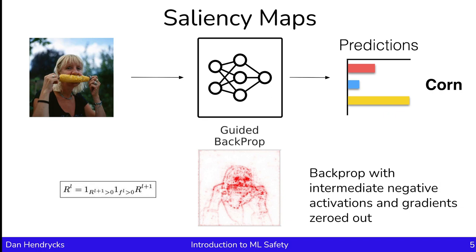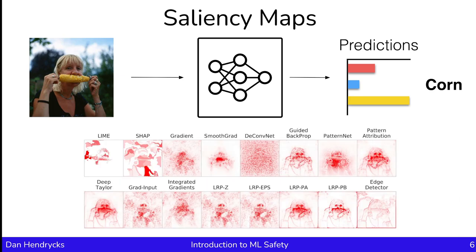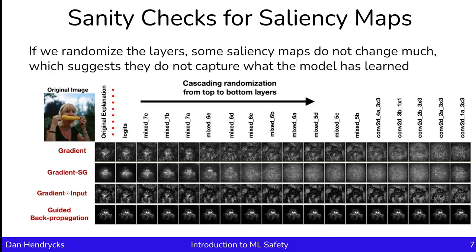Evidently, researchers like looking at interesting-looking saliency maps, and indeed there are many others. Unfortunately, many saliency maps don't pass basic sanity checks. What we might want from a saliency map is for them to change if a model is being randomized. So if we randomize the layers of a neural network one by one, some saliency maps don't actually change that much, which suggests that they don't capture what the model has learned. For example, in the case of Guided Backprop, as we randomize more and more layers in the neural network, the explanation doesn't change much. Consequently, it didn't seem to capture what the model learned — Guided Backpropagation is giving us an interesting-looking saliency map, but this means that sole visual inspection can be deceiving.